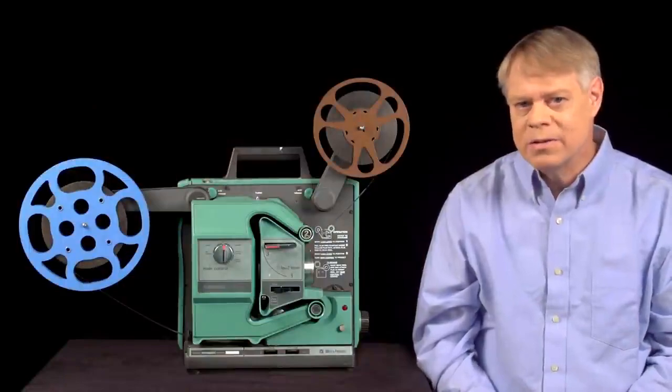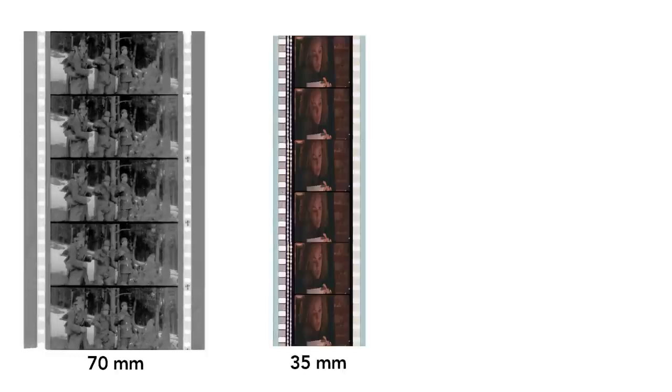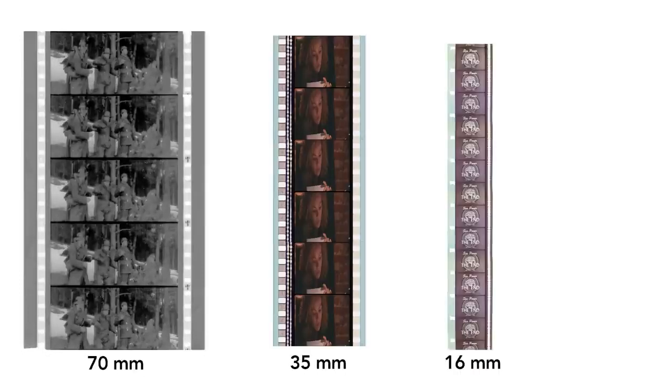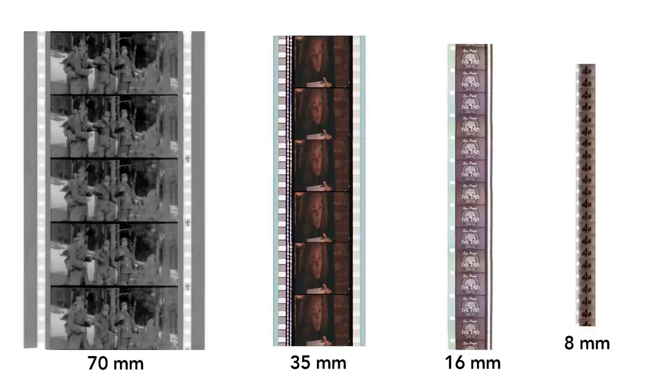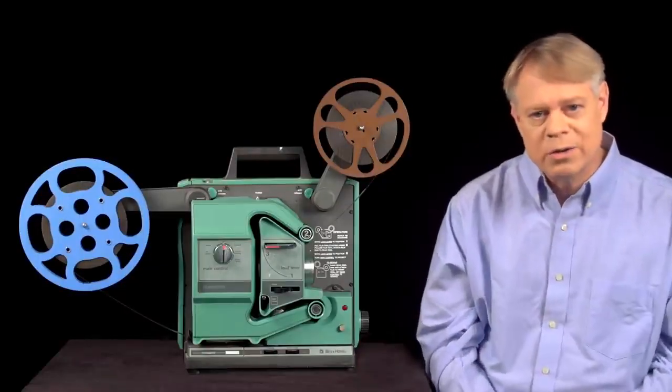Film came in many sizes, from the giant 70mm popular in the 1960s for epics like Lawrence of Arabia, to 35mm used for most feature films, to 16mm for schools, and even 8mm used by home enthusiasts. The larger the film, the greater the resolution, of course. All worked with mechanisms similar to common 16mm projectors.